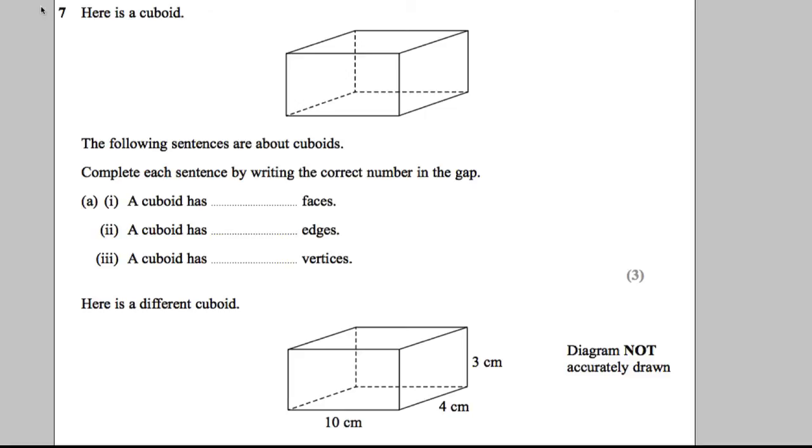Question 7, let's get our highlighter out. Here is a cuboid, so here's a picture of a cuboid. The following sentences are about cuboids. Complete each sentence by writing the correct number in the gap. A cuboid has a certain number of faces, a cuboid has a certain number of edges, a cuboid has a certain number of vertices. So I'm going to show you what each of these means.